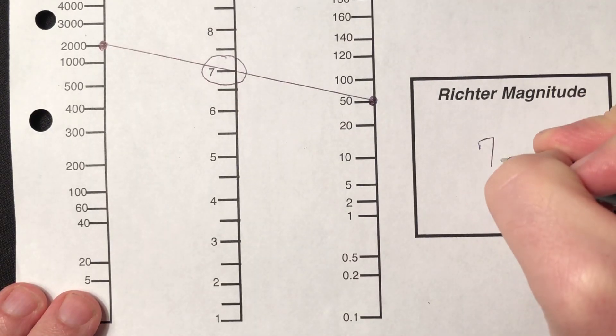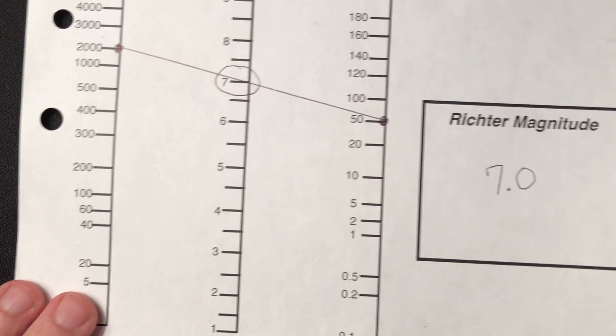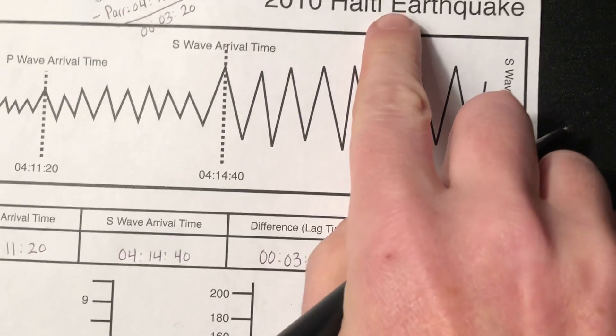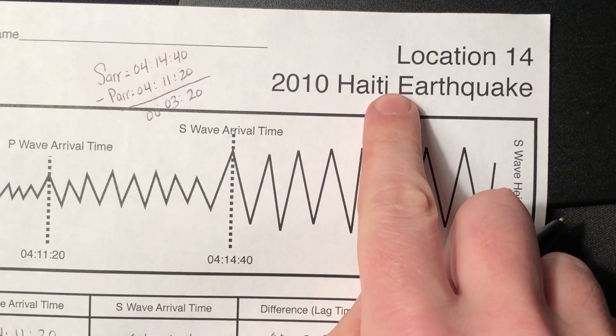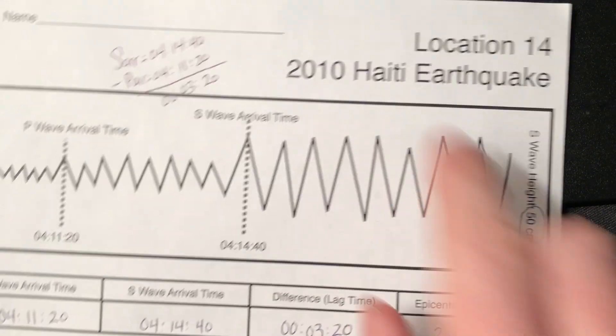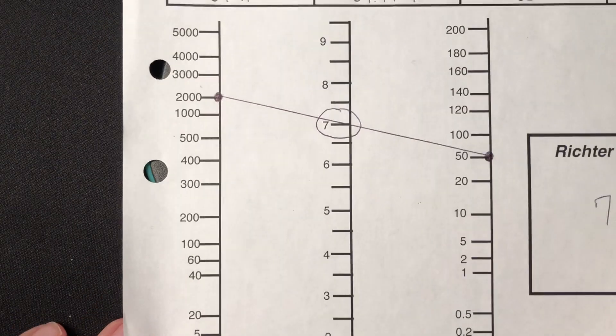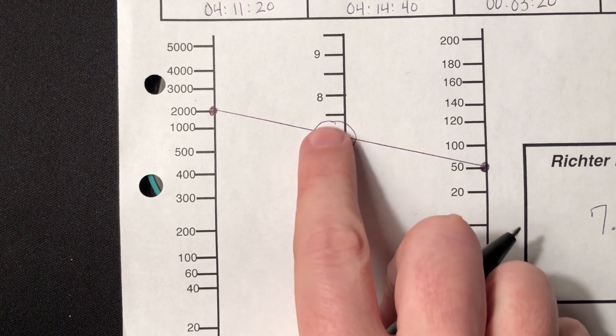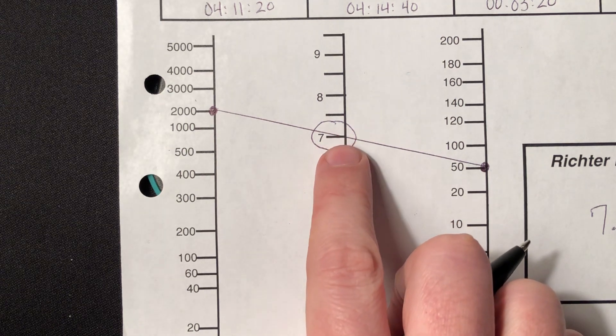And that was about a 7.0 on the Richter scale back in 2010. That was a big one that destroyed Port-au-Prince, the capital of Haiti. Right on a transformed plate boundary, so that's right in line with the magnitude that many of the transformed boundaries give us.